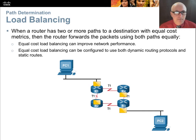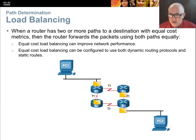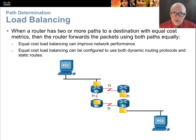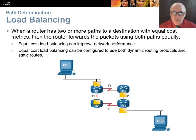Load balancing is the concept that if you go through the process of finding a best path and end up with two equal best paths — a tie — you split the traffic between them. By default, most routing protocols can handle up to about six or eight best paths that tie as the best, and it will round-robin the packets across them to load balance traffic across all the best paths it has determined.